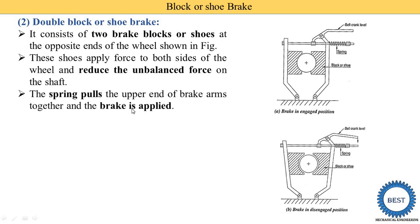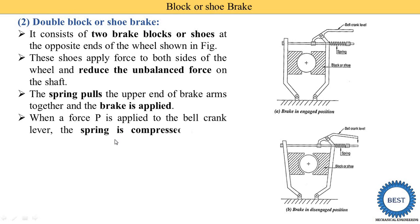The spring pulls the upper end of the brake arms together and the brake is applied. When the spring is pulled, the block comes in contact with the wheel and the brake is applied. When force P is applied to the bell crank lever, the spring is compressed and the brake is released. The wheel and block are disengaged and the brake is released.